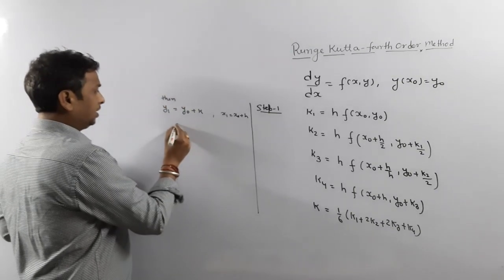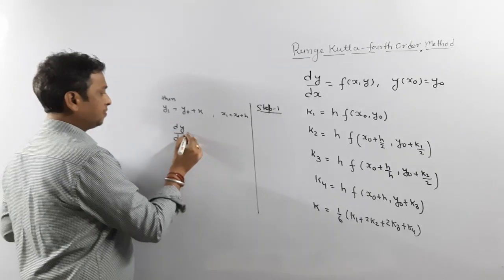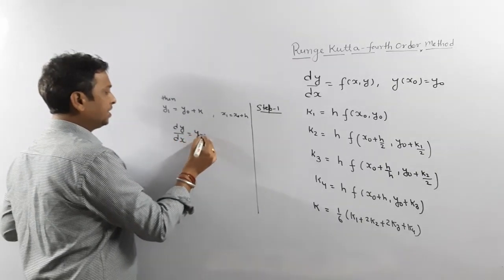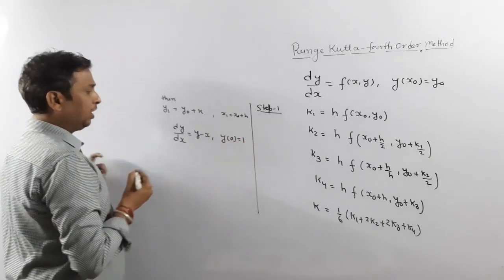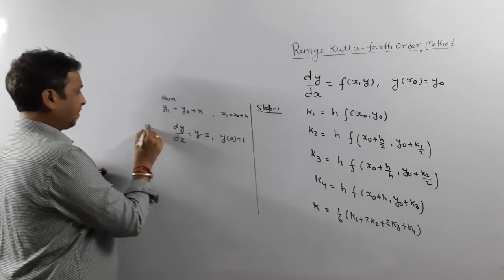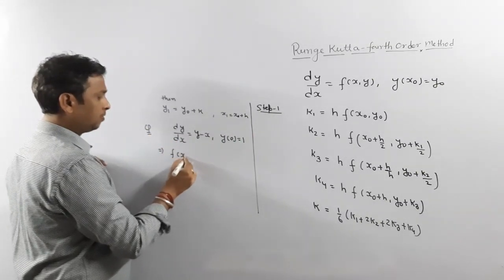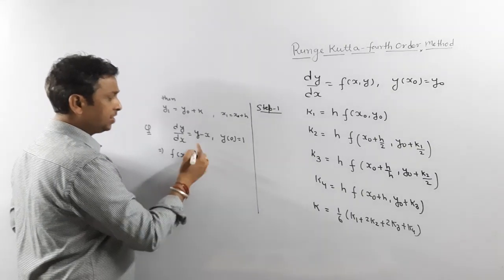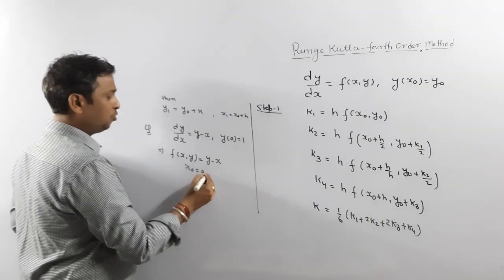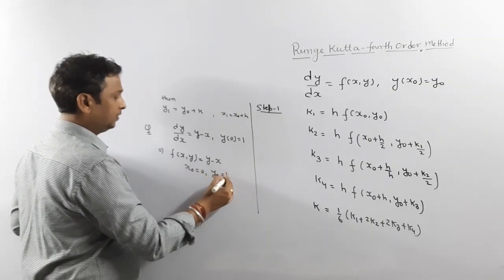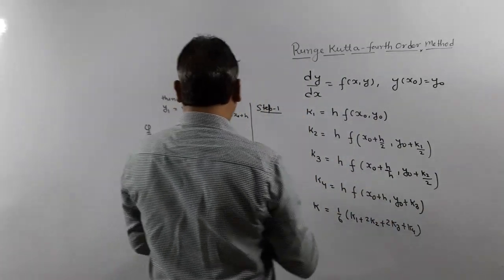For example, dy/dx = y - x, y at 0 is given 1. We are going to solve this question using Runge-Kutta method. What is your f(x,y)? f(x,y) is y minus x. What is your x0? 0. What is your y0? 1. Once you know x0, y0, calculate K1 value.